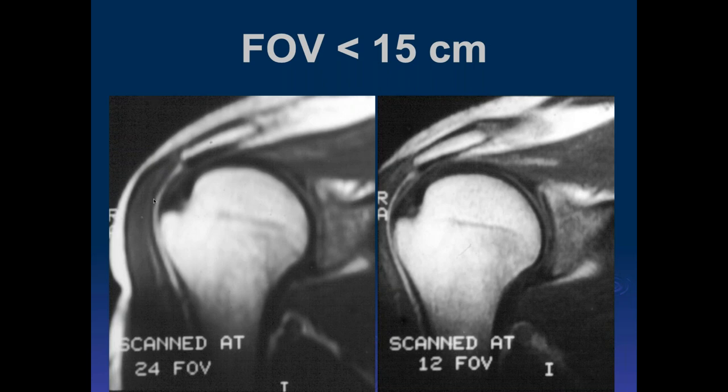Back around 1989, one paper came out in radiology saying MR was worthless for labral tears; the very next issue said MR was 97 percent accurate — both used the same scanner. The difference was technique: the 'worthless' group scanned at a 24 cm field of view, while the 97 percent accurate group scanned at a 12 cm field of view. Resolution is very important.